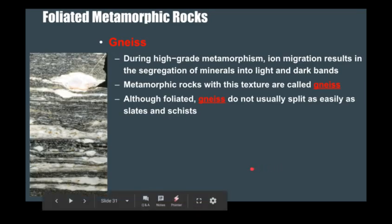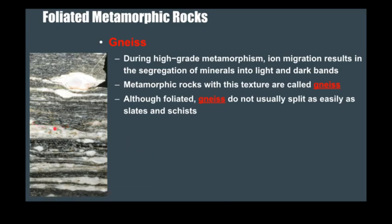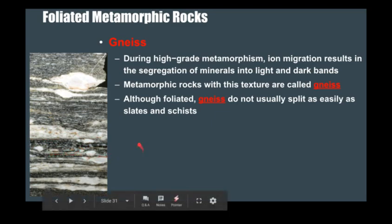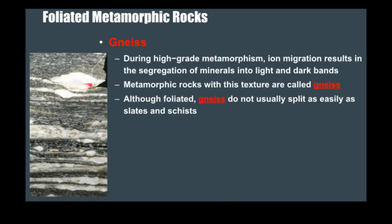Here's a gneiss — a high-grade metamorphic rock. You get migration of ions that results in segregation of light and dark minerals. And here is an augen gneiss. Augen is a German word for eye, and it has these eye-shaped features which could form from shearing in some cases.